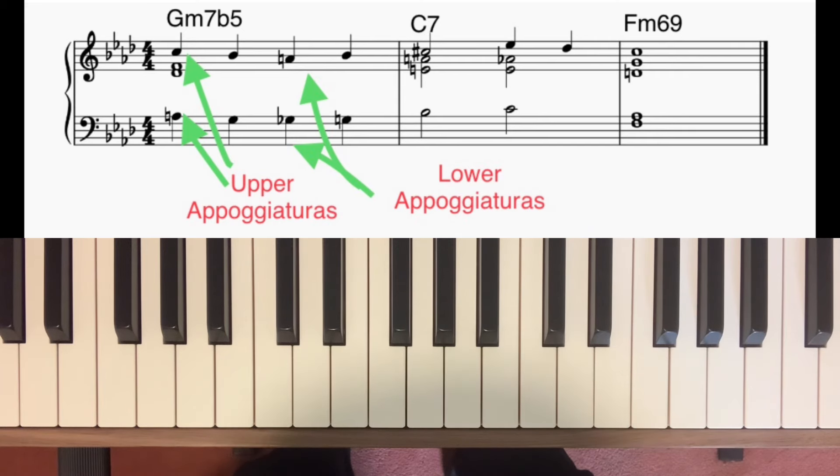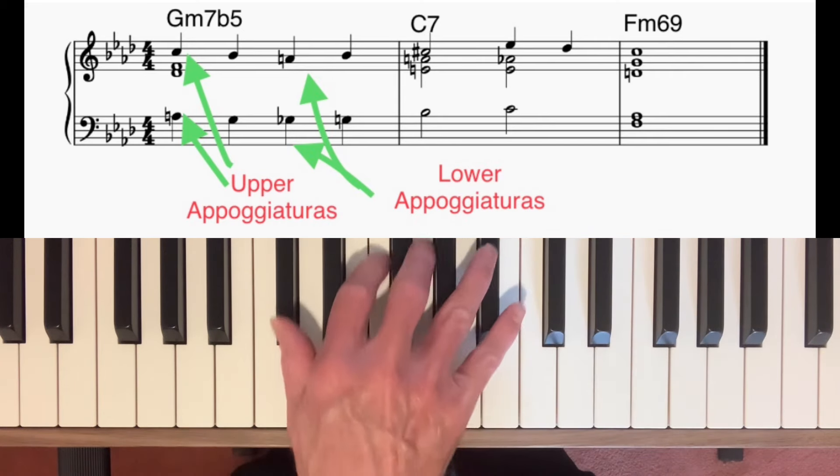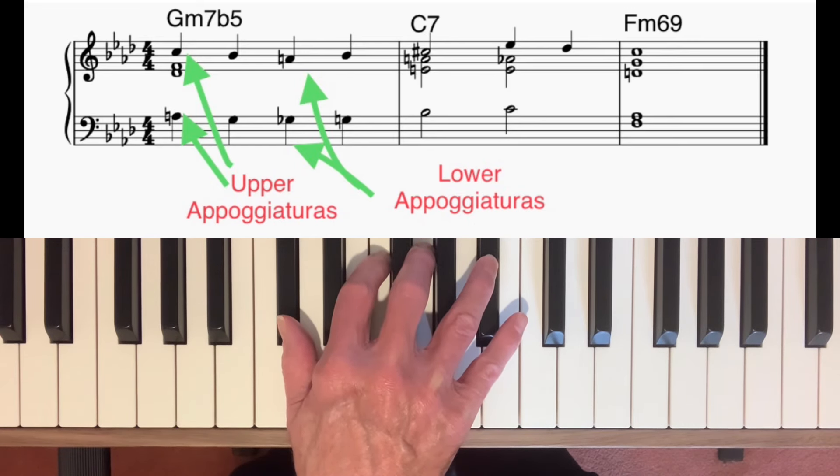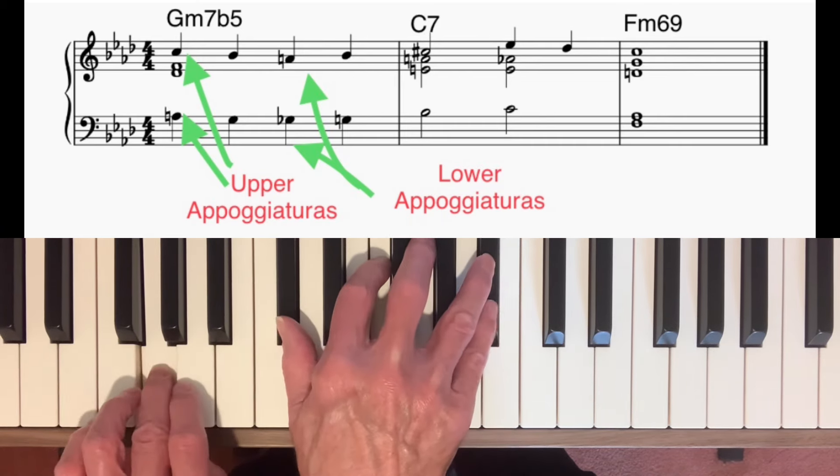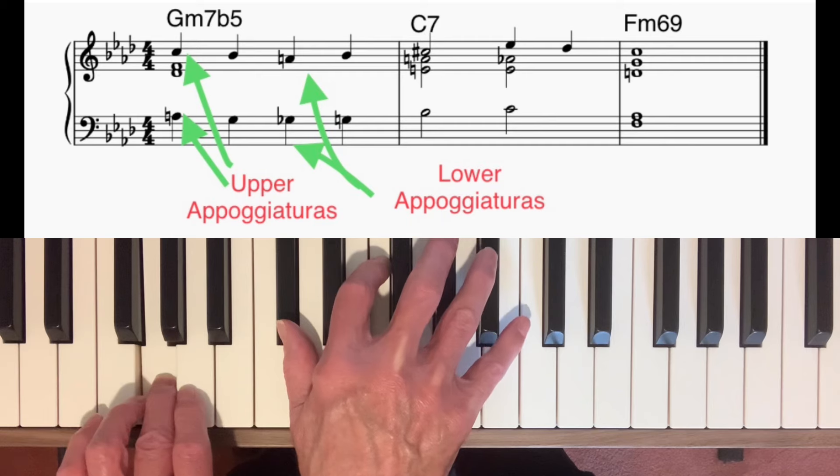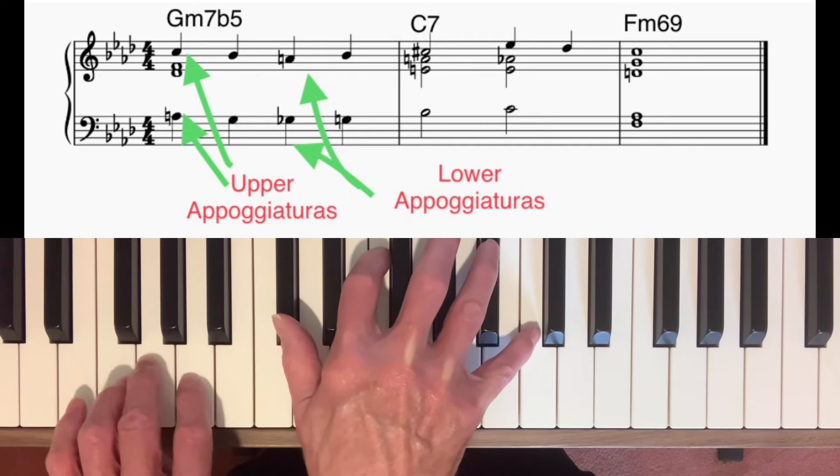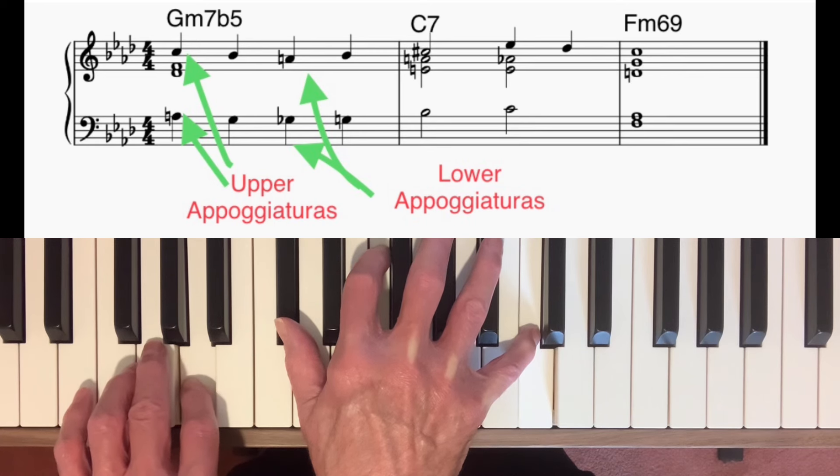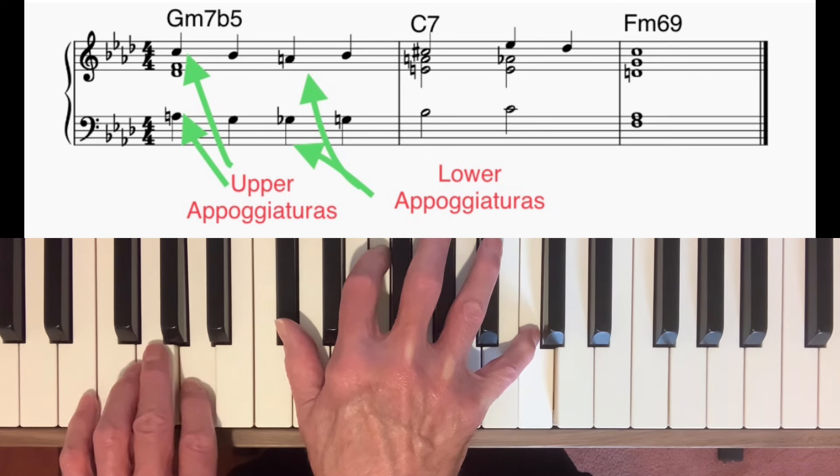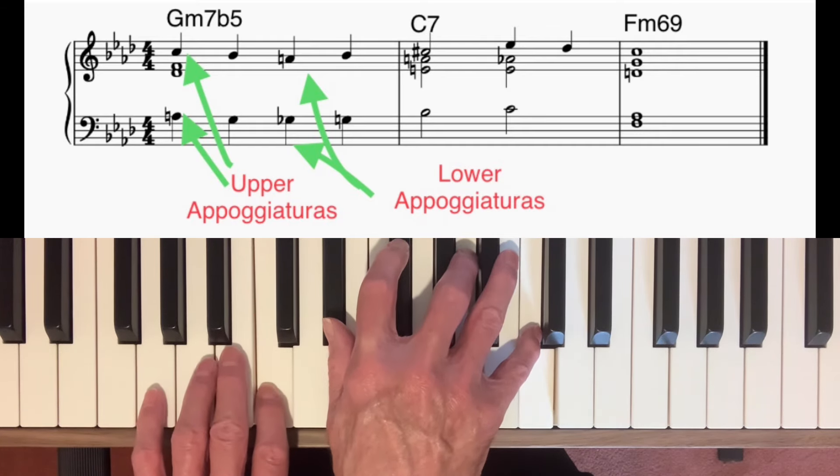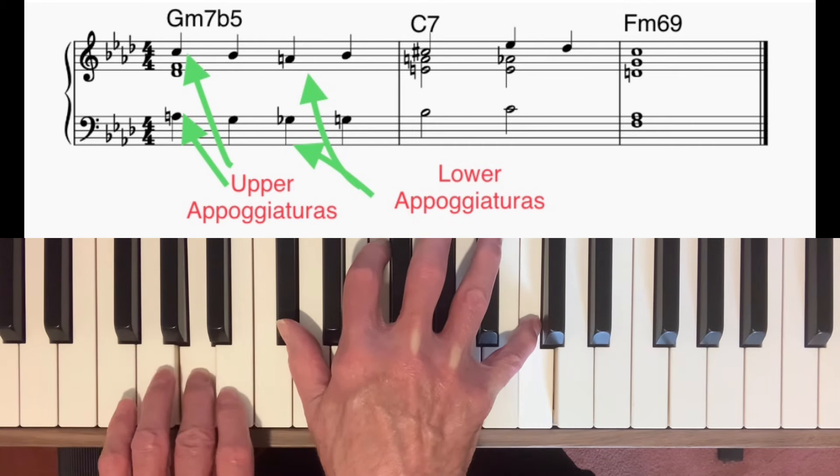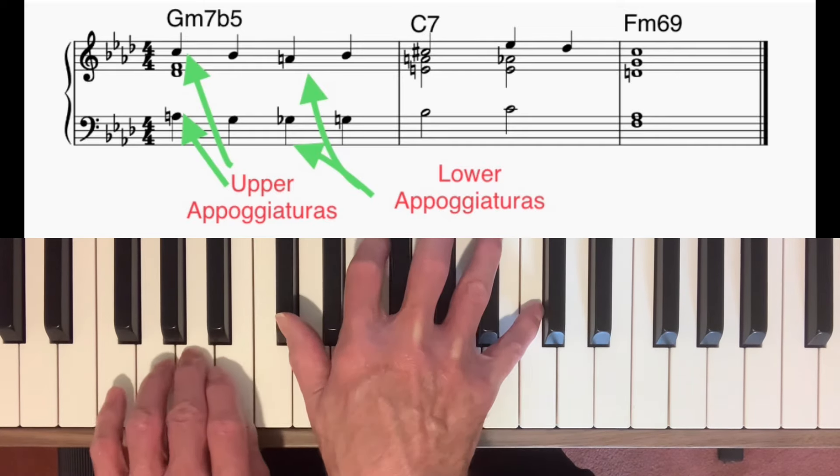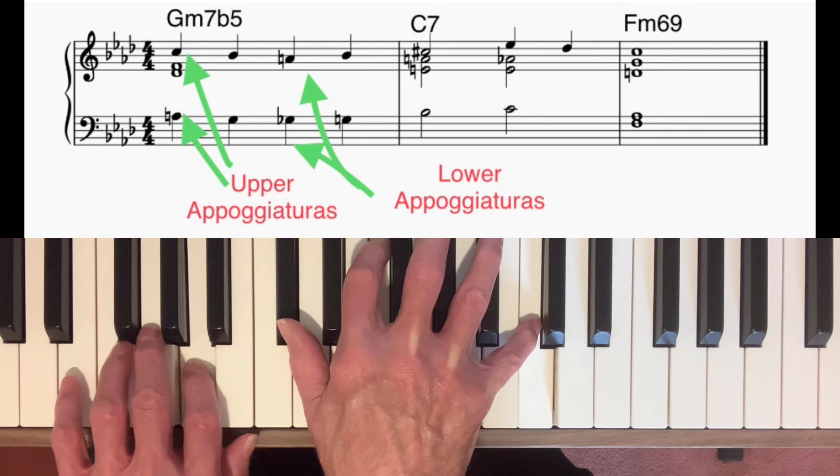So on the G minor 7 flat 5 chord, I started off by looking at that voicing. It's just a G minor 7 flat 5 in second inversion. I took the G out and put it at the bottom to make it a drop 2 voicing. But instead of playing it like that straight away, I moved the top note and the bottom note up a step, borrowing a note from the diminished 7th chord in the scale. So the diminished 7th chord is that one. So I borrowed the C and the A from that and played it like that. And then they both resolve onto the chord notes. So once again we've got upper appoggiaturas resolving onto chord notes.